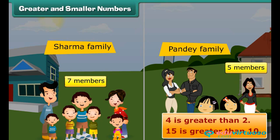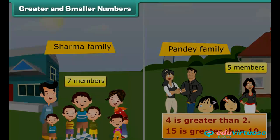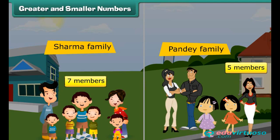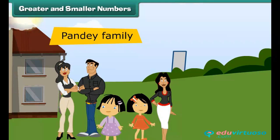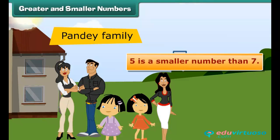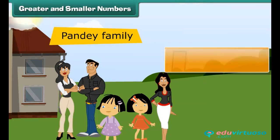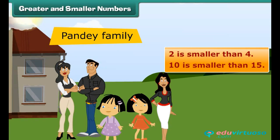Let us now look at these cases from the other side. Pandey family has fewer members, which means five is a smaller number than seven. Therefore, we can say that numbers that come before are smaller than the numbers that come later. Two is smaller than four. Ten is smaller than fifteen.